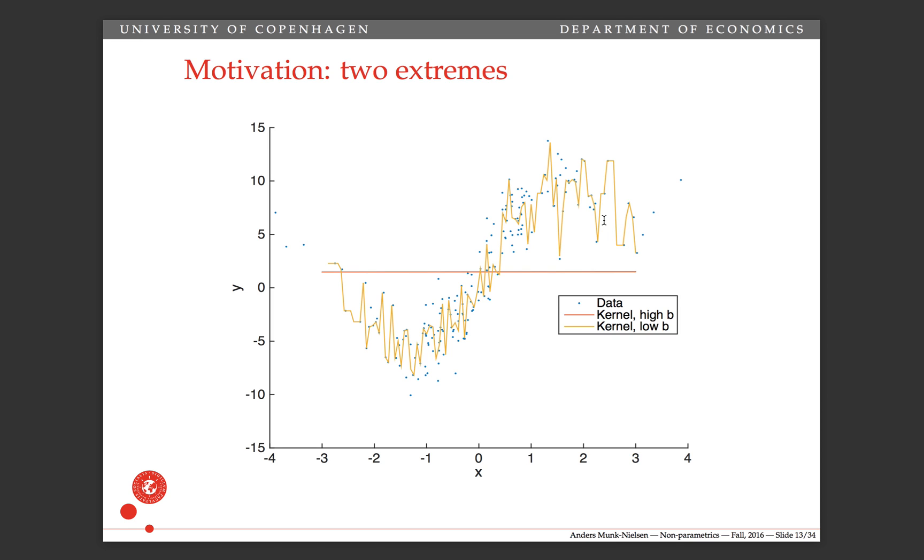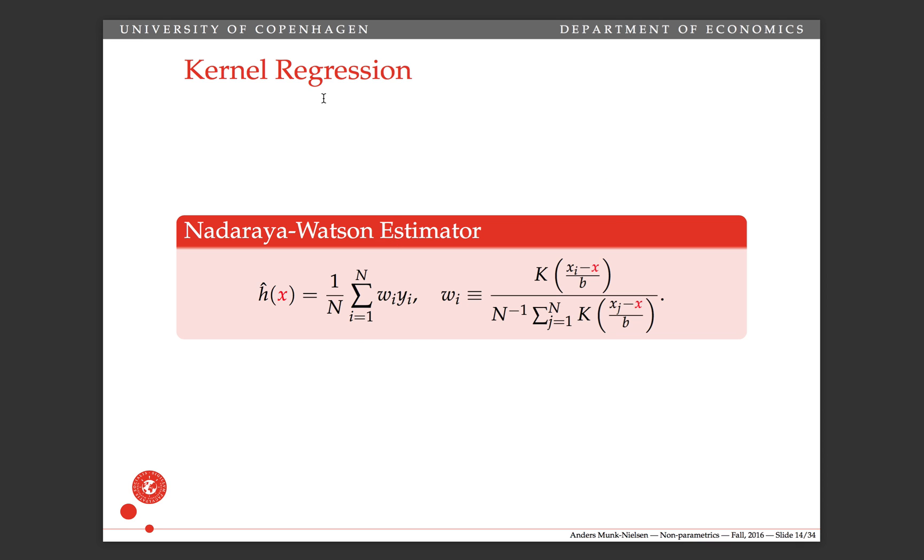This is what the kernel regression estimator looks like: it's an average over all the y's with weights on each of them, and these weights depend on x, the place where we are evaluating the kernel regression estimator. They're going to sum to one, that's why this denominator is constructed like this. The numerator is constructed so that it puts higher weight on observations that are closer to the x where we are evaluating it. The bandwidth then controls how quickly this weight changes as we move away from the x, the red x where we are evaluating this function.